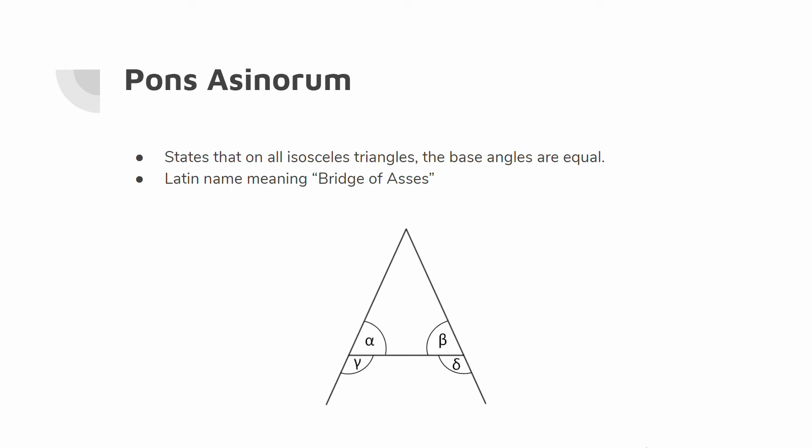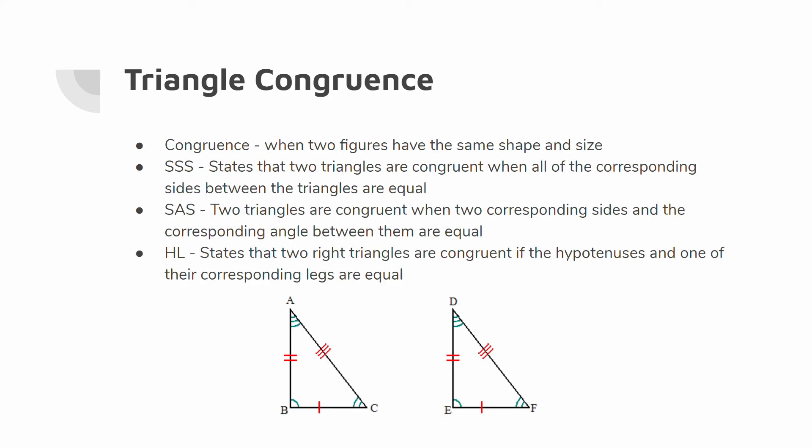Next, we need to prove Pons Asinorum. Pons Asinorum is a theorem that states that an isosceles triangle, which is a triangle with two equal sides and a base, has base angles that are equal. An interesting fact is that the name is Latin for 'bridge of asses.' Before we get into that proof, we need to talk about some congruence criteria. When two shapes are congruent, they have the same shape and the same size, meaning all sides and angles correspond equally.